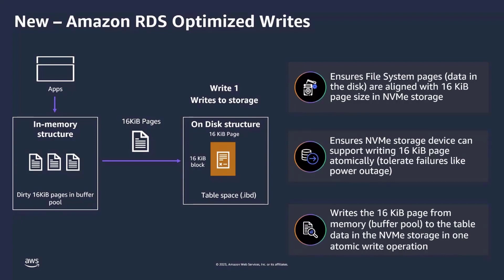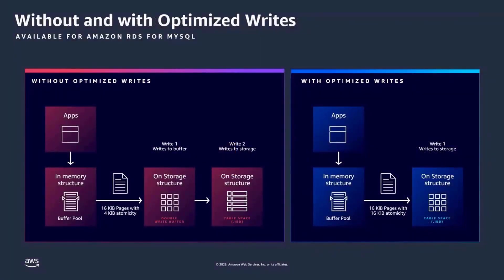Torn Write Prevention ensures that the 16-kilobyte data page in memory is safely written to the table storage in one single step and is protected from failures such as power loss during the writes. On the left is an instance without Optimized Writes, and on the right is a system with Optimized Writes. Standard MySQL receives a write, it goes to the in-memory buffer pool, and is then written to a Double Write Buffer in 16-kilobyte pages. From that buffer, the data is then again written to your table space — that's a total of two writes.